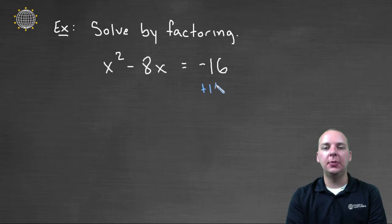So let's go ahead and add sixteen to both sides. And then we'll get zero on the right hand side, and we'll get x squared minus 8x plus sixteen on the left hand side.